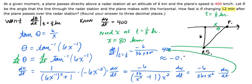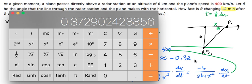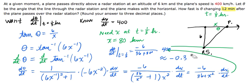-0.32 if we're rounding to two decimal places, looks like that would be 373, -0.373, and it's going to be in radians per hour.